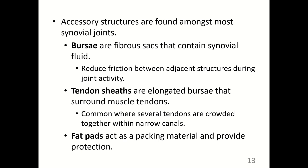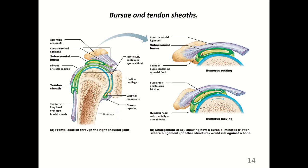There are accessory structures found among most synovial joints. Bursae are fibrous sacs containing synovial fluid that reduce friction between adjacent structures during joint activity. Tendon sheaths are elongated bursae that surround muscle tendons and are common where several tendons are crowded together within narrow canals. Fat pads act as packing material and provide protection. The bursa acts like a ball bearing, rolling between tendons and ligaments to reduce friction, and tendon sheaths wrap around the tendons to do the same.